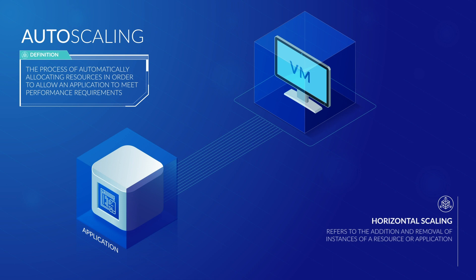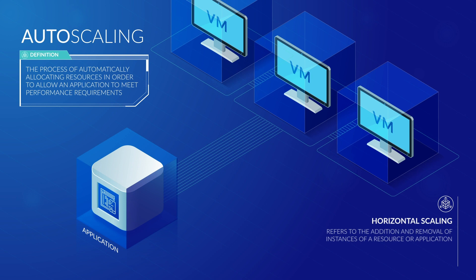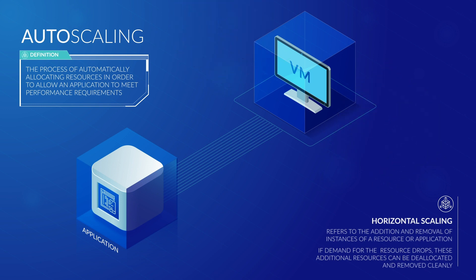Horizontal scaling allows an application to continue running without any downtime while new resources are provisioned for it. After additional resources are provisioned, the application or solution is then deployed across the new resources. If demand drops, these additional resources can be deallocated and removed cleanly. Most cloud systems, including Microsoft Azure, offer support for horizontal scaling.